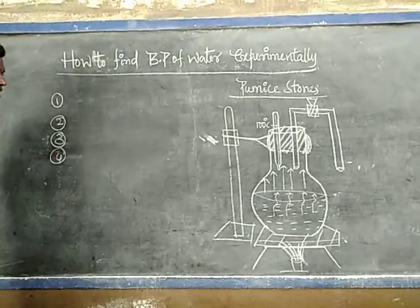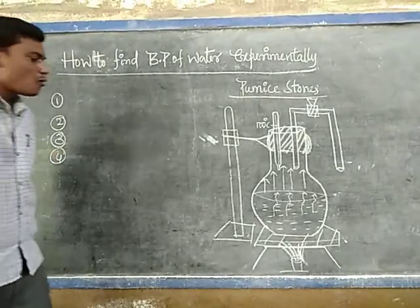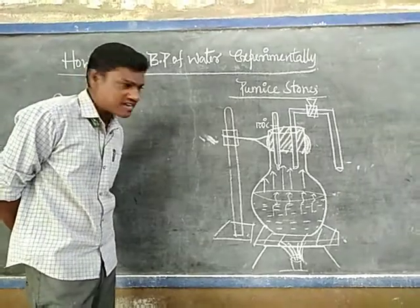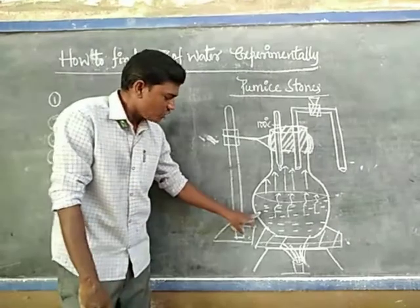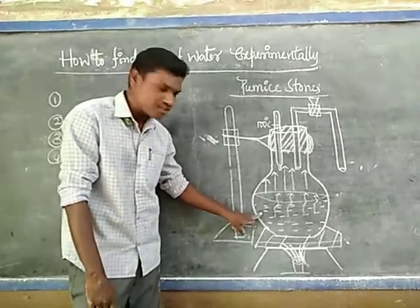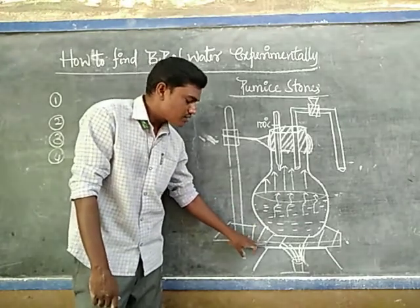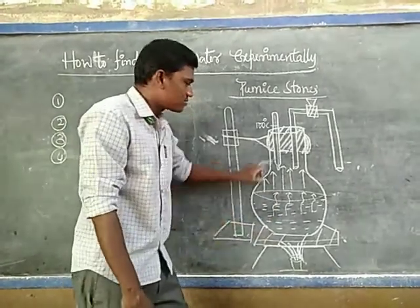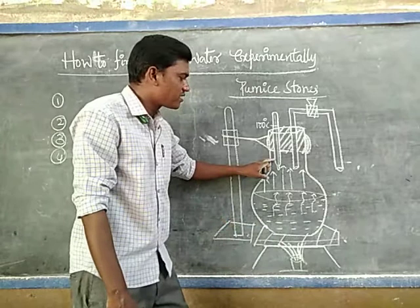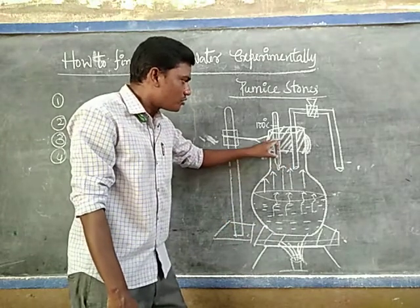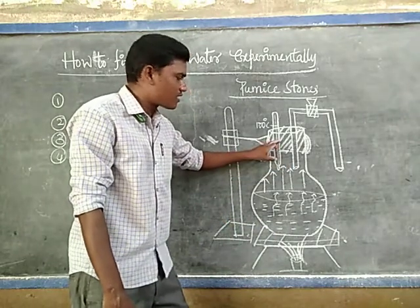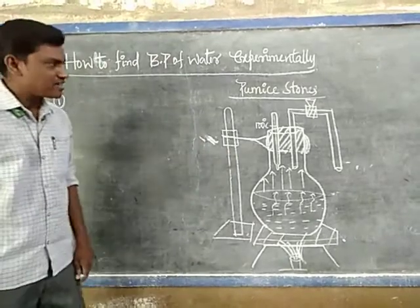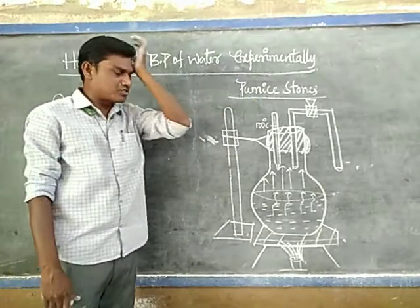Let me state the materials again. What are the materials required? Round-bottom flask, wire gauze, tripod, Bunsen burner, thermometer, delivery tube, two-hole rubber cork, retort stand, and pumice stones. These are the materials required to conduct the boiling point of water experiment.